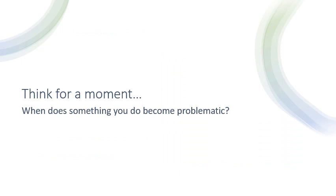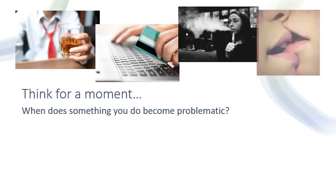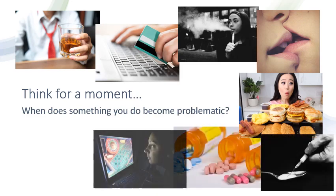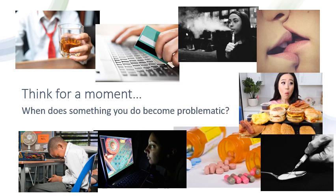To begin with, let's think for a moment about our own behaviour and perhaps the behaviour of people around us, and ask the important question: when does something that you or I do become problematic? There are lots of different types of behaviour that we study in psychology, particularly in relation to addictions. An interesting question is: who does it become problematic for? Is it problematic for the individual, for their friends or their family, for people in the workplace, or is it problematic on some level for society?